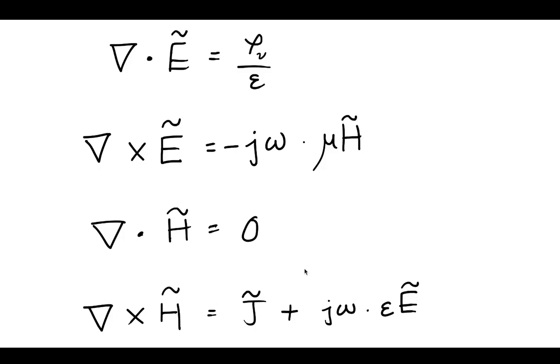The reason we want to look at that is because Ampere's Law has both this J term, the source current, and an electric field, whereas Faraday's Law just has one term on the right-hand side.